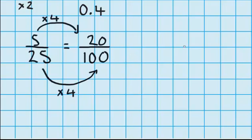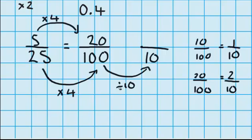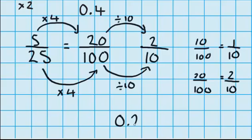Now I know that ten hundredths is the same as one tenth, so twenty hundredths must be the same as two tenths. We can check that just like we did before — let's change this so that the denominator is now ten. To move a hundred down to ten, I'm going to divide by ten. Since I've divided the denominator by ten, I'll need to divide the numerator by ten. Twenty divided by ten equals two. We've got two tenths here, which matches what we worked out. It's easy to change two tenths into a decimal — it is 0.2.